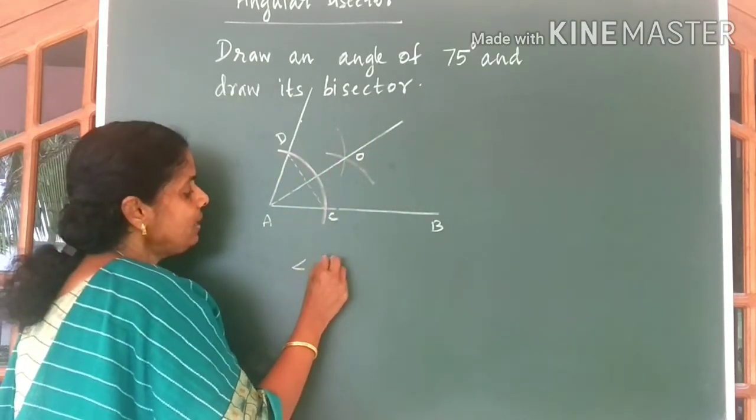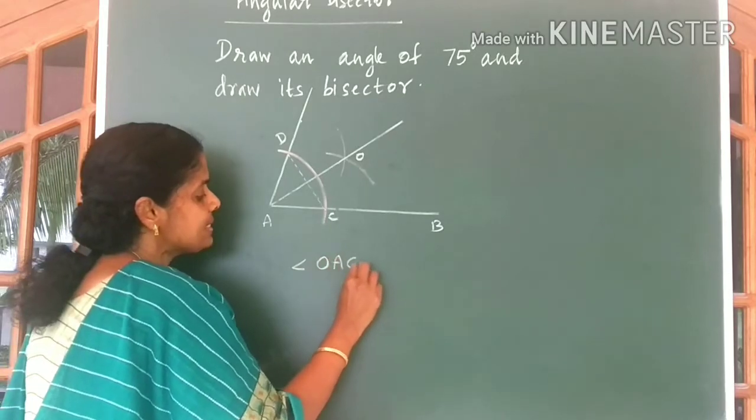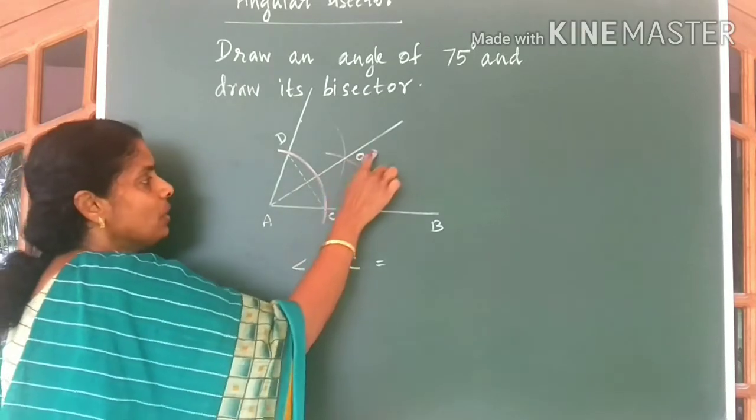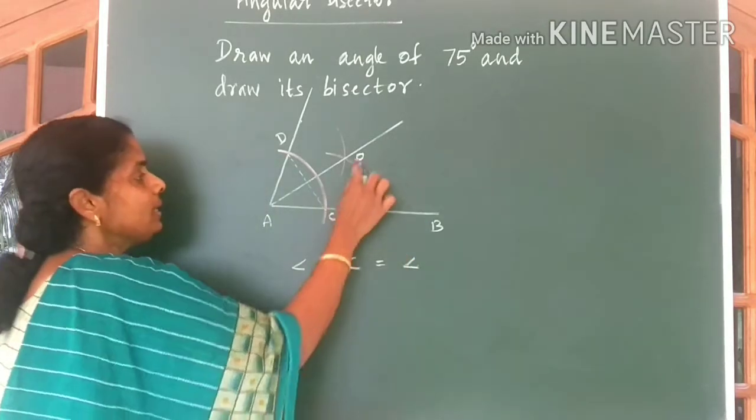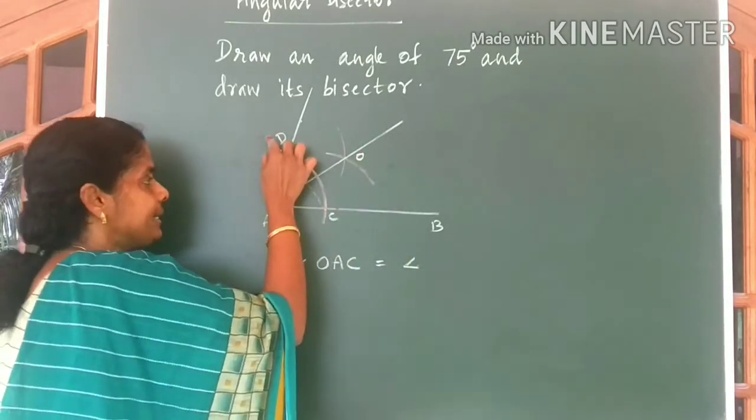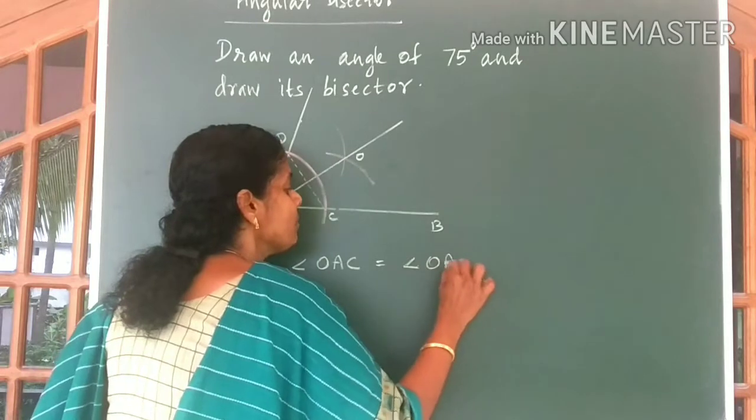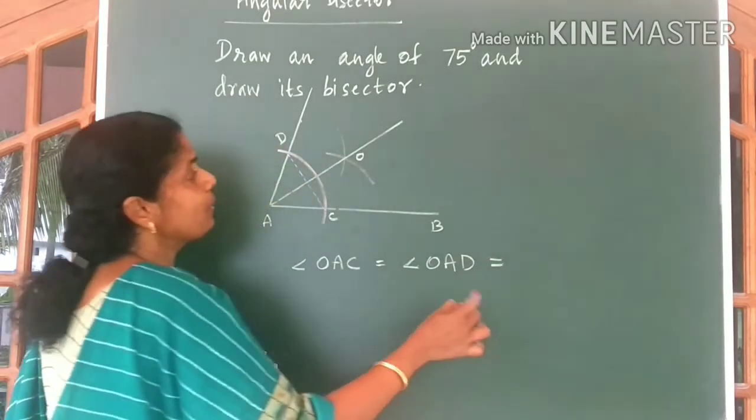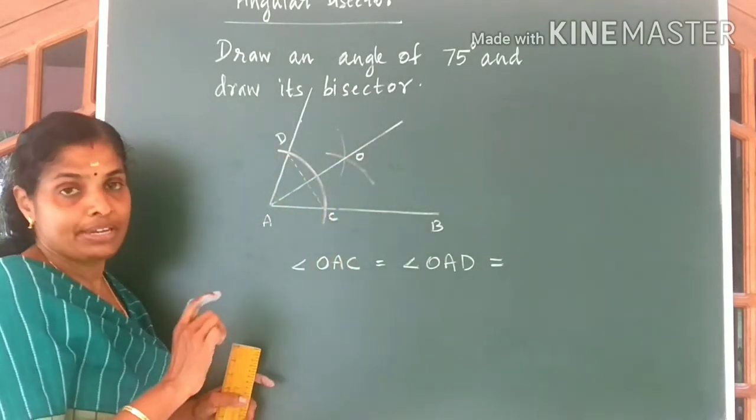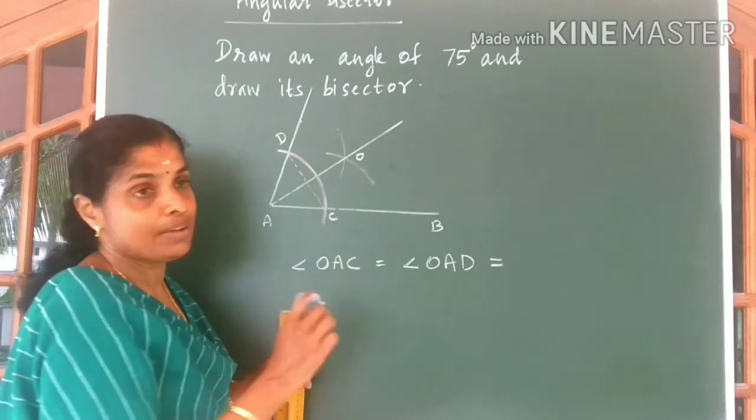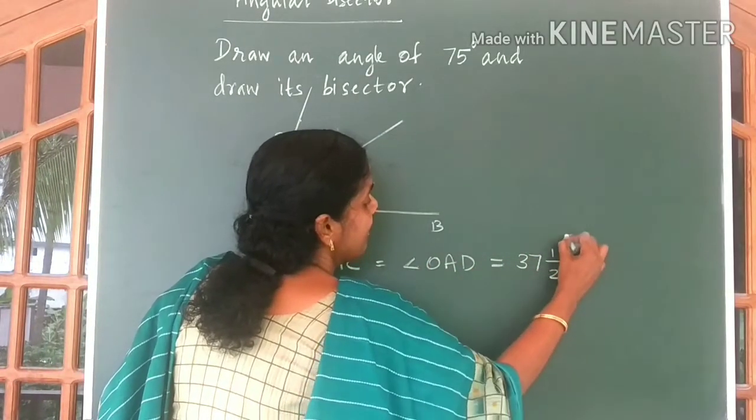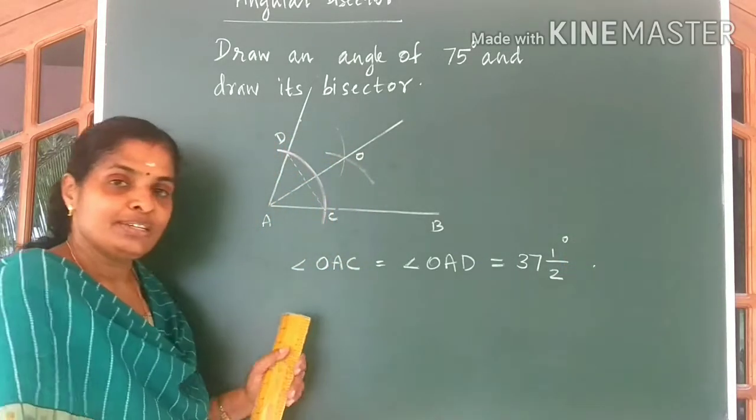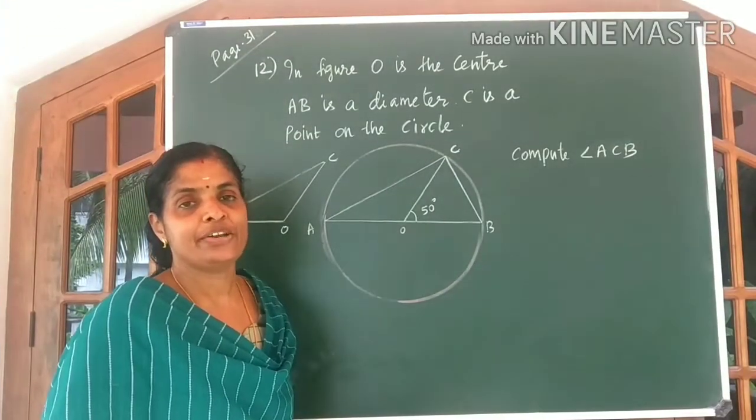Now you can say angle OAC, this angle OAC will be equal to angle OAD. Both angles are equal to half of 75. How much is half of 75? You get 37 and half degrees. Hope you understood. Come to the third question, children.